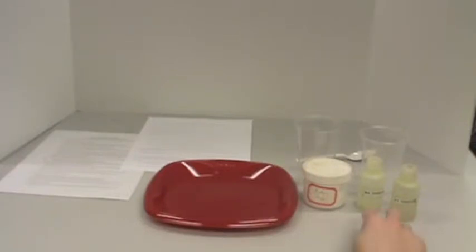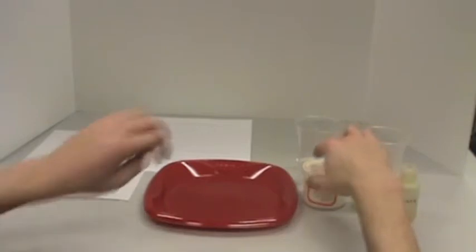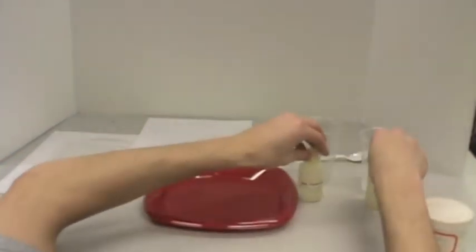One container of baking soda and one spoon. Place the vinegar solutions beside the matching cup. Add a level spoon of baking soda to each cup.